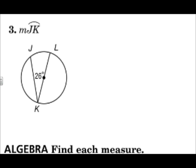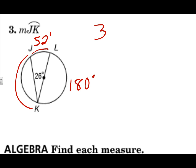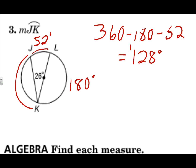For the measure of arc JK, I have to think about it first. The measure of arc KL is a semicircle, so that's 180 degrees. The measure of arc JL is the intercepted arc for the inscribed angle, which is double 26, or 52 degrees. All the way around the circle is 360, so 180 plus 52 plus arc JK equals 360 — subtract to get 128 degrees. Watch for those extra steps; semicircles are 180, all the way around is 360, and the inscribed angle is half the intercepted arc.